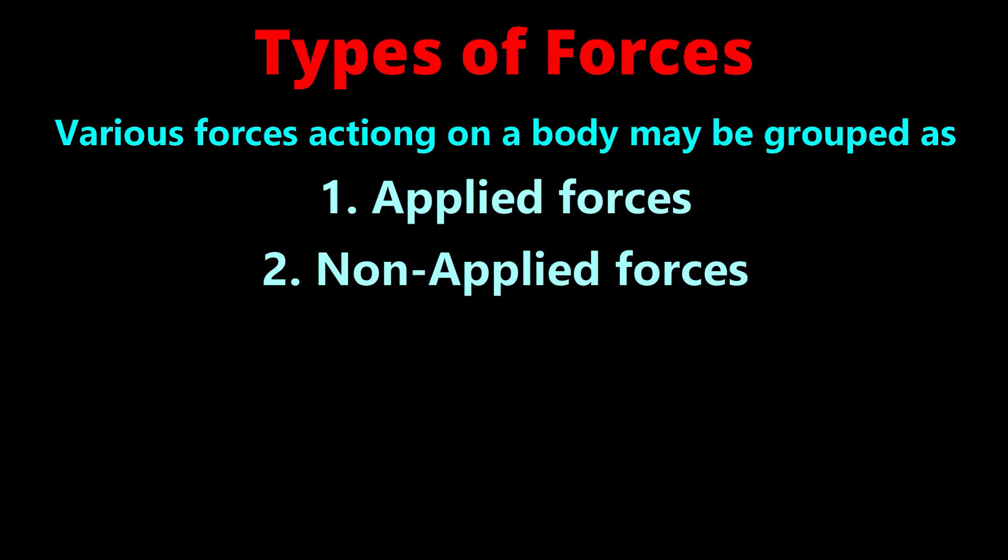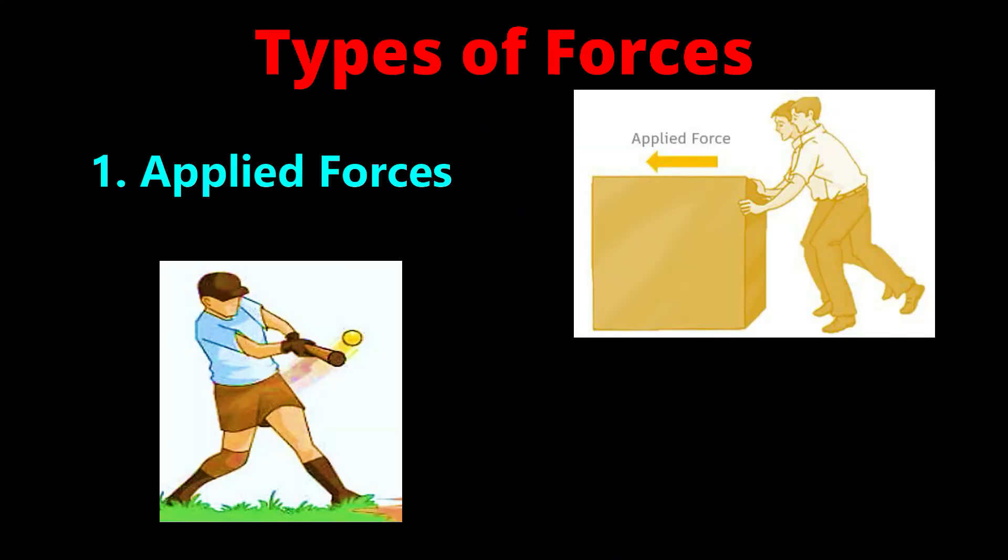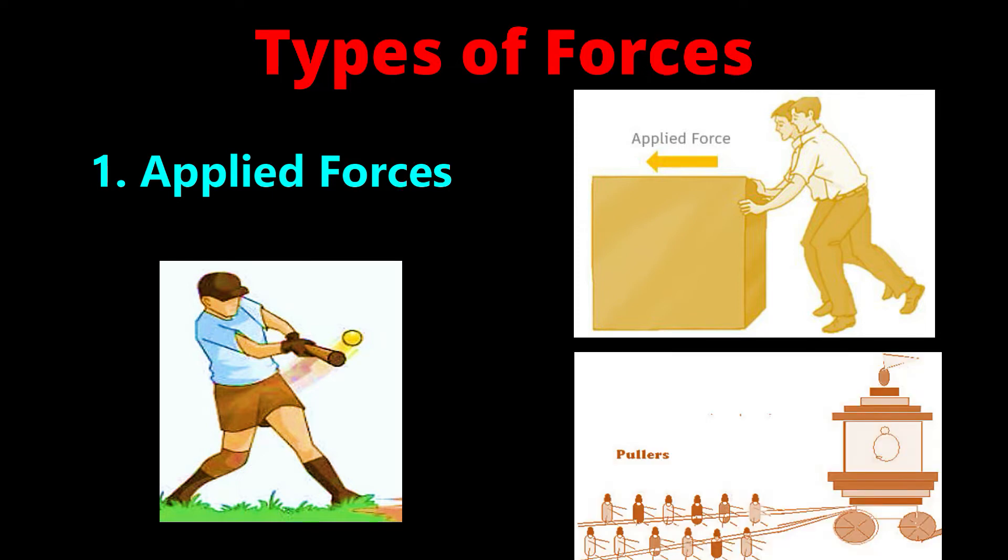First, types of forces. Various types of forces acting on a body are classified mainly into two groups: applied forces and non-applied forces. Applied forces are forces applied externally to a body; each of these forces has a point of contact with the body. Examples: if we keep our hand on a table, the weight of our hand is an applied force to the table. Also, if a temple car is pulled, the force in the rope is an applied force for the car.